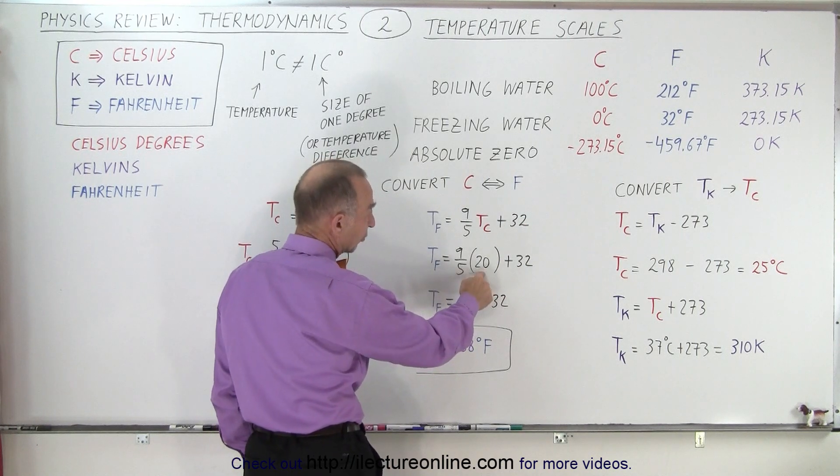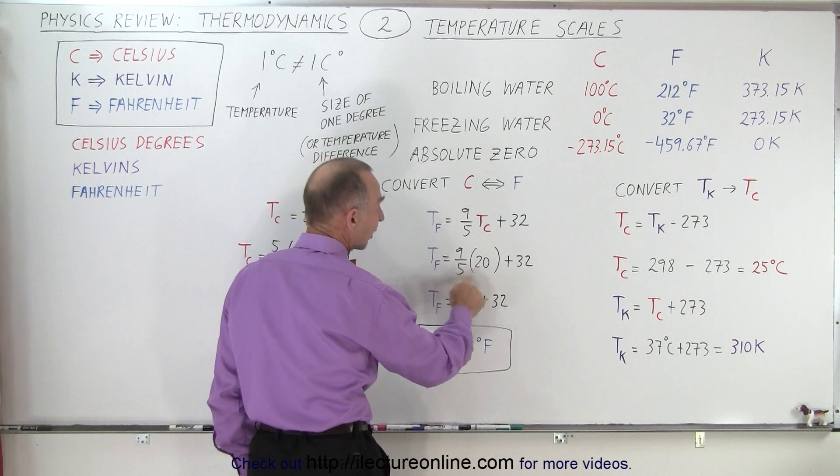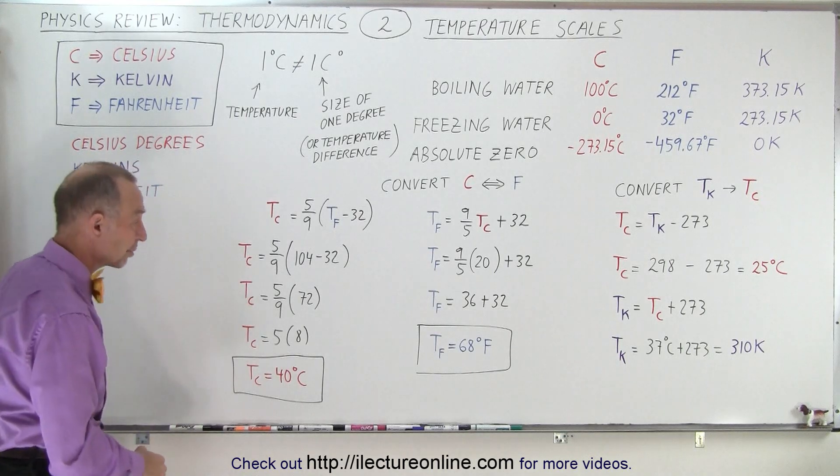We take the degrees, let's say it's 20 degrees Celsius, we multiply times 9 over 5, we add 32, that gives us Fahrenheit degrees. So in this case, 20 degrees Celsius is 68 degrees Fahrenheit.